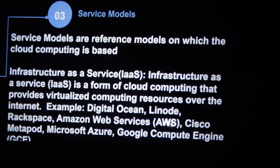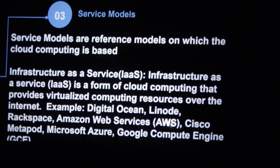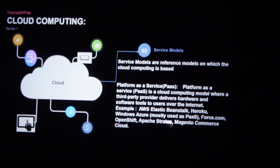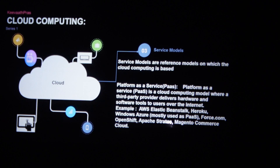Infrastructure as a Service is the infrastructure — basically what is needed as a backbone — being used as a service. A service is something done to accomplish a particular task. This infrastructure provides virtualized computing resources over the internet. The top three examples are Amazon Web Services, Microsoft Azure, and Google. There are many others, but these three are the top contenders.